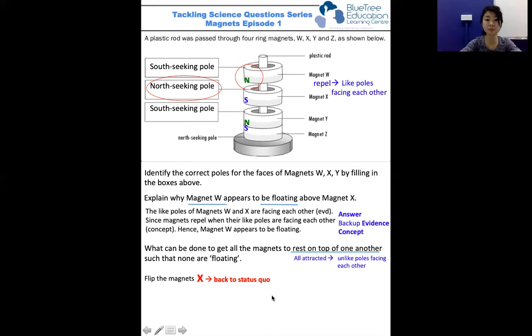So you need to be specific. You either flip X because if you flip X, you will realize that the unlike poles of X and W will be facing each other, and the unlike poles of X and Y will also be facing each other.